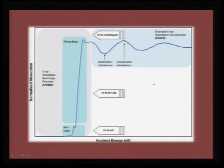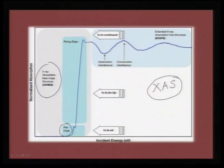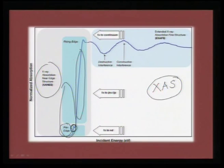Just to map what different studies we can do in XAS: we can talk about a pre-edge, which can be characterized as X-ray absorption near edge structure - XANES. This is the region where you can actually map the information you are getting. You would get several features around this edge. This is what we call X-ray absorption near edge structure, and this is the region where you actually work for X-ray absorption spectroscopy.